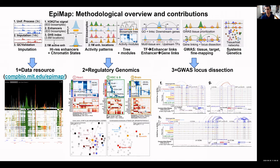The contributions are threefold. First, a data resource at compbio.mit.edu/epimap, which is browsable and interactive — you can download specific combinations of data and browse regulatory genomics and disease dissection results. Second, insights on regulatory genomics: what are the modules of enhancers acting together, their target genes, upstream regulators, and motif combinations across human tissues? Third, systematically dissecting the circuitry of complex trait loci, for example coronary artery disease looking at liver and heart loci.